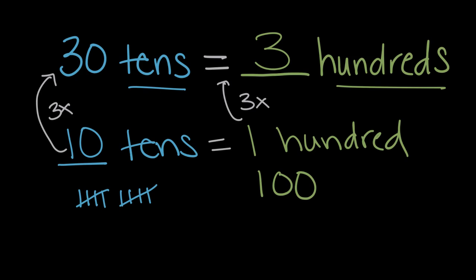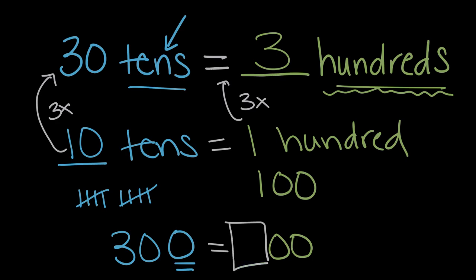We could also think about this in terms of place value. Here we have this tens. And we know that tens can be represented by a zero. So instead of thirty tens, we could simply write a thirty with a zero on the end. That's zero for tens. And then over here, equal to, we have hundreds. And hundreds can be represented by two zeros. So to make these equivalent, what number we'll need to fill in this spot? And the answer again is a three, like we already saw up top. So thirty tens is equal to three hundreds.